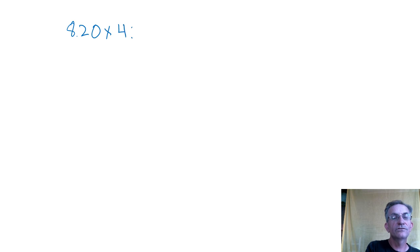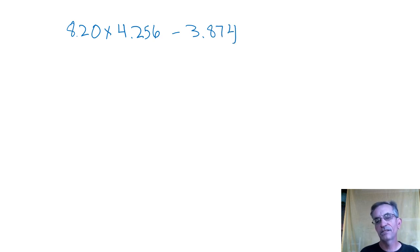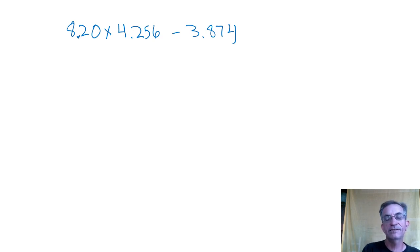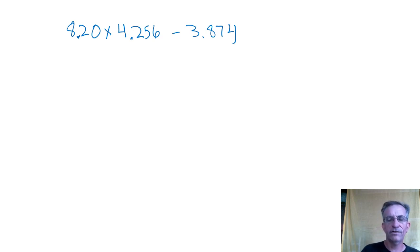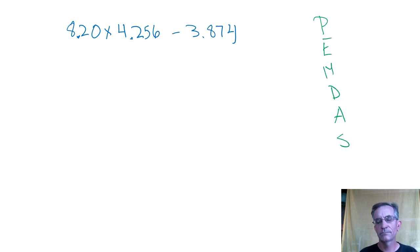Let's do one last one. We're going to do this math problem: 8.20 multiplied by 4.256, and then subtract 3.874. Issue number one — you have to know what order to do the math in: 8.20 times 4.256 minus 3.874. What do you do first — multiply or subtract? You multiply first.